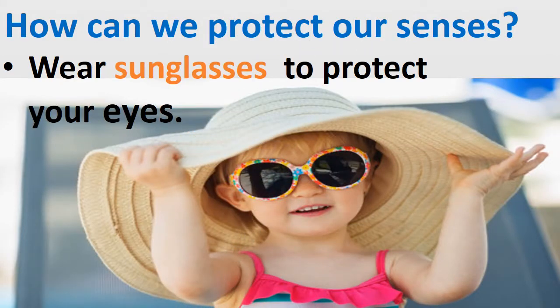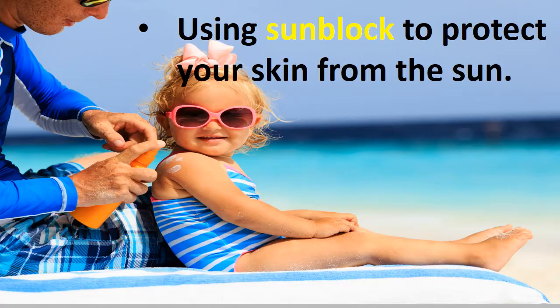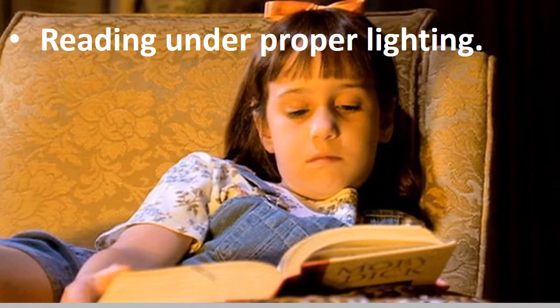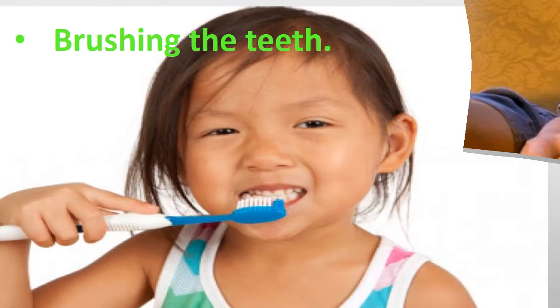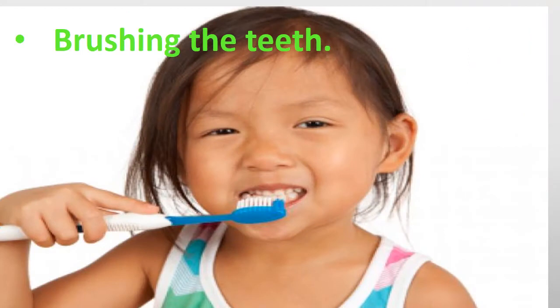We can protect our senses by taking care of our sense organs. Protect your eyes from too much sunlight by wearing sunglasses. You can use sunblock to protect your skin from the sun. When you are reading, read under proper lighting. You must keep your mouth clean — brush your teeth daily.